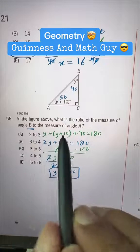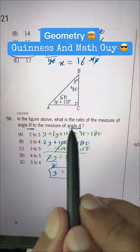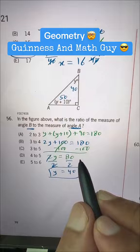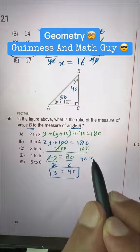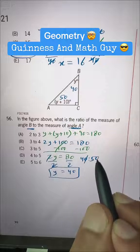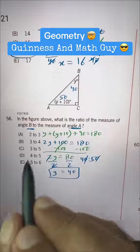Now it's saying ratio of angle B to angle A. So B to A is 40 is to 50. If we skip both zeros, it's 4 is to 5, that's the ratio.